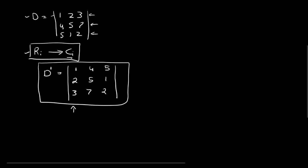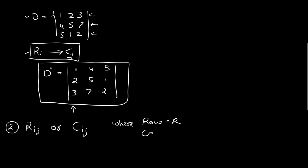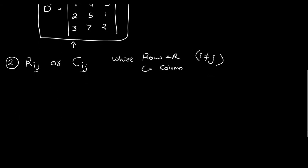The next operation that we can perform on the determinant can be denoted by rij or cij, where r is basically our row and c is our column. One important thing in this notation is that i does not equal j. Now, if we want to interchange the i-th and j-th row of a determinant, we use this symbol.